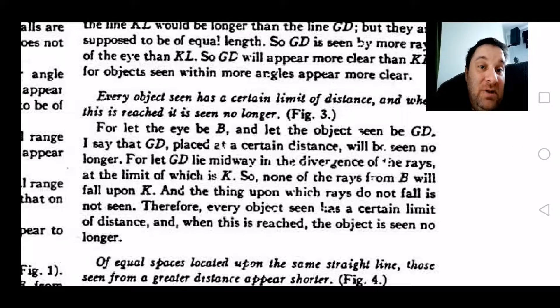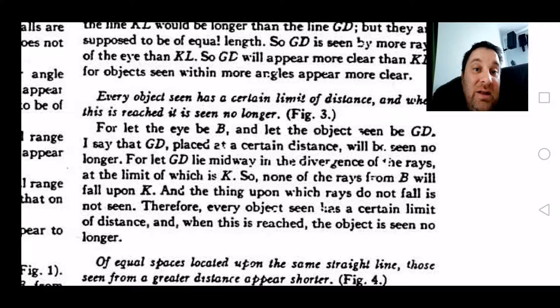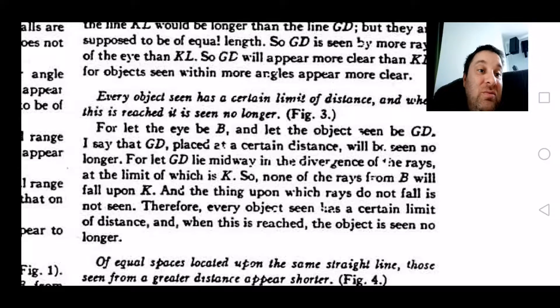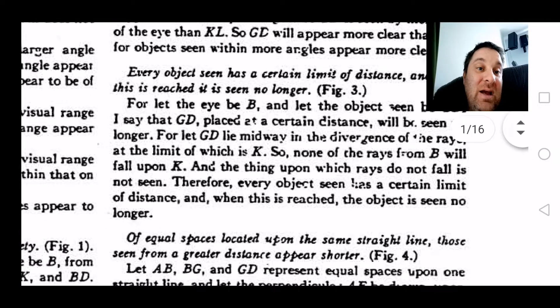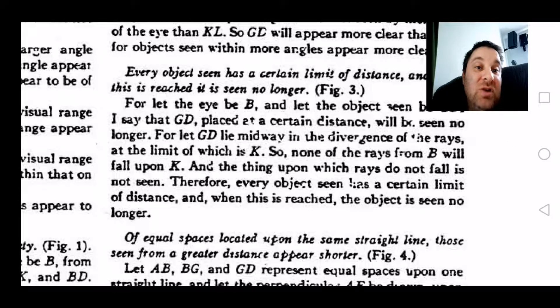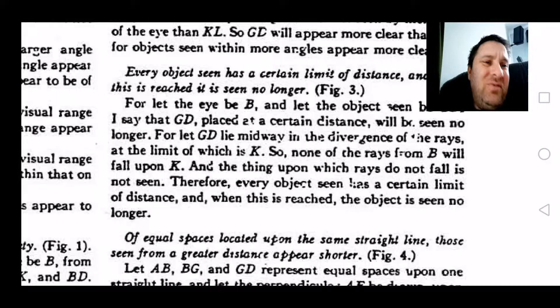I say that GD, placed at a certain distance, will be seen no longer. For let GD lie midway in the divergence of the rays at the limit of which is K. So none of the rays from B will fall upon K, and the thing upon which rays do not fall is not seen.